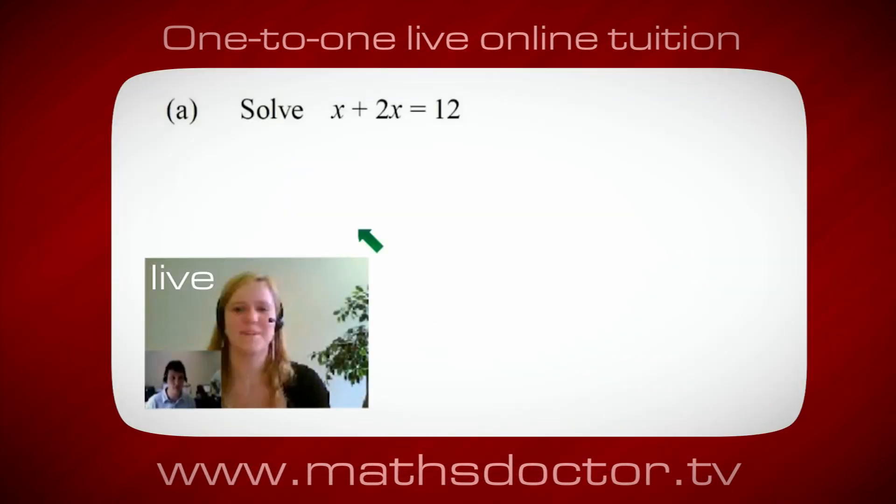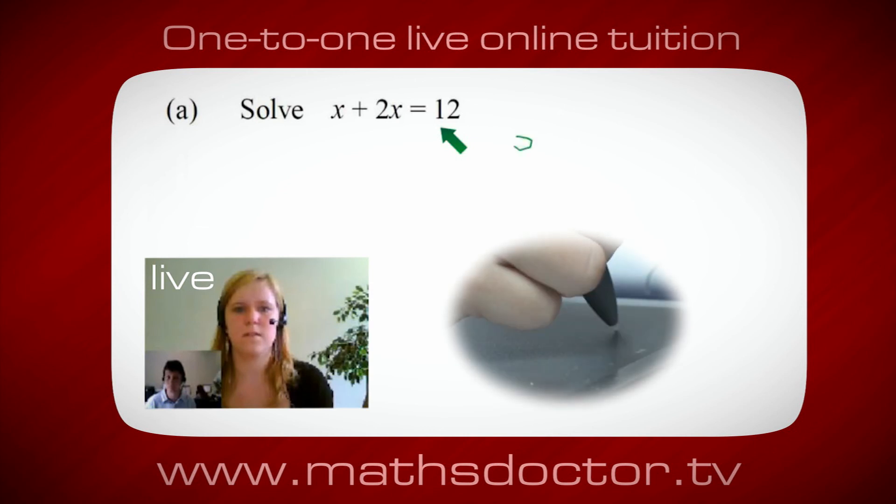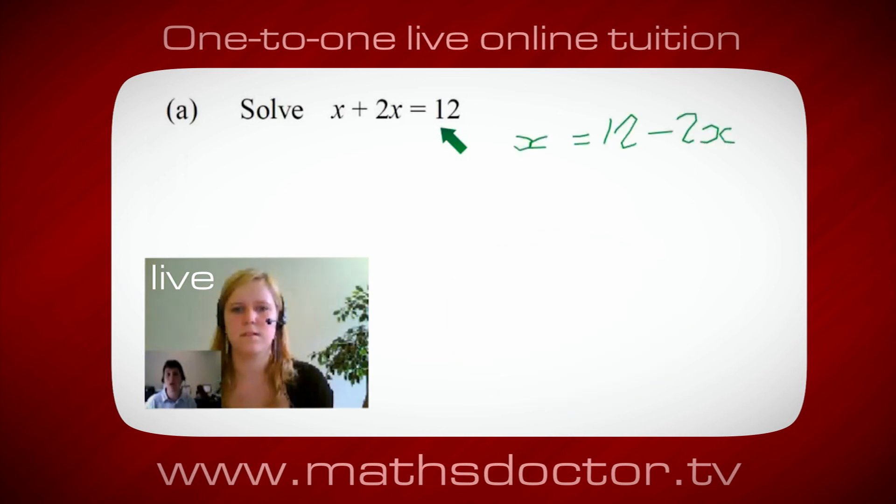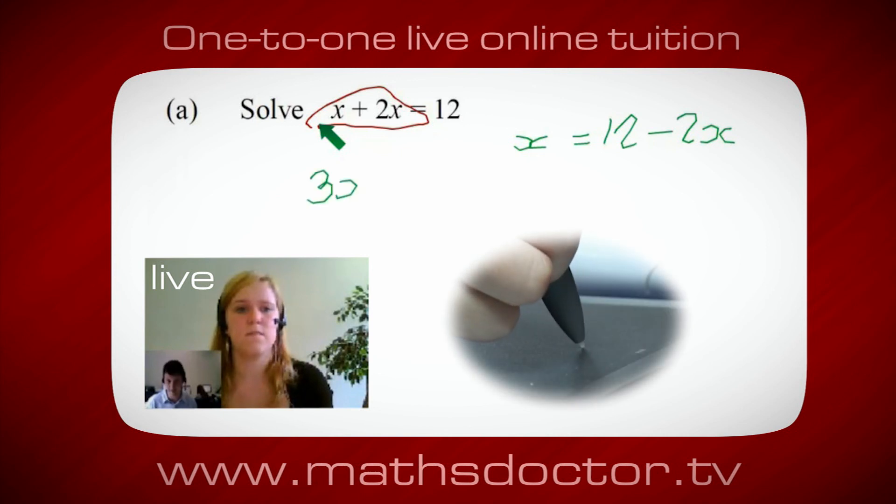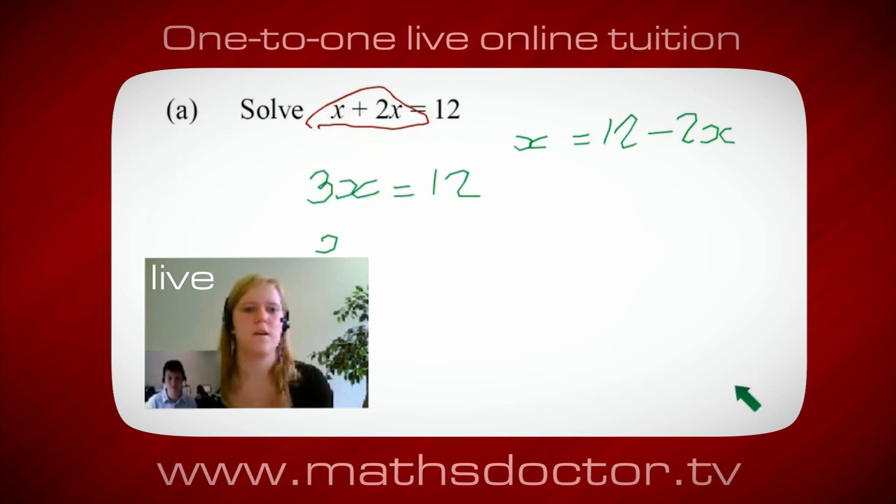Okay Marie, so let's have a look at this one. Solve x + 2x = 12. So what do you think you'd do first? I want x on its own, so I would put x = 12 - 2x. Okay, so a lot of the time we want to get x by itself, but what we want to do first is get all of these x's together. Can you see anything we can do with this? Oh okay, it's 3x, isn't it? Yeah, absolutely. So 3x = 12. And so x = 4. Brilliant, spot on. Well done.